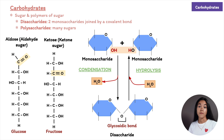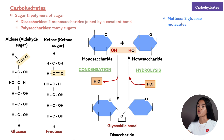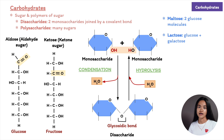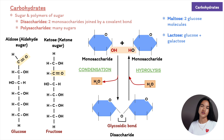A common disaccharide is maltose or malt sugar, which is used in brewing beer — it consists of two glucose molecules joined by a glycosidic linkage. Another example is lactose, the sugar present in milk, which is a combination of glucose and galactose. Lactose intolerance is common in individuals who lack the enzyme lactase, which breaks down lactose. Without it, lactose is broken down by intestinal bacteria, resulting in cramping and gas.